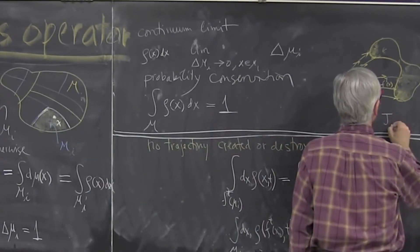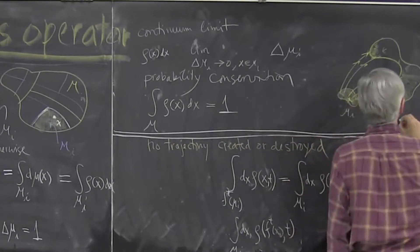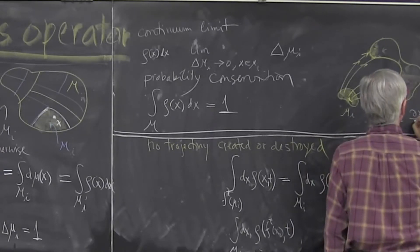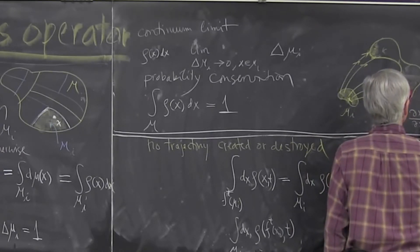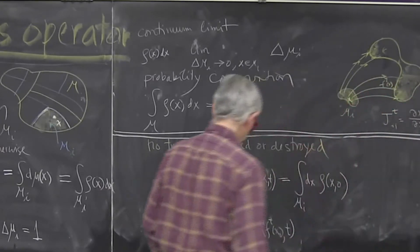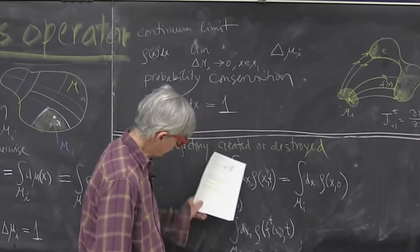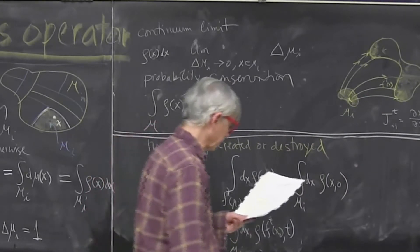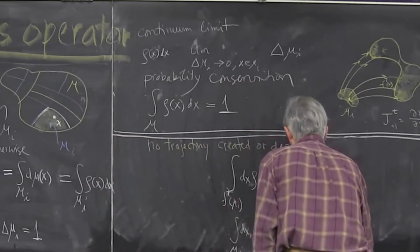That'll be Jacobian J which is delta x to x0 delta x to t. So if I change my coordinates, I have to pick up a Jacobian